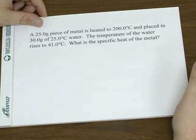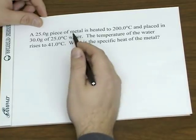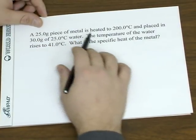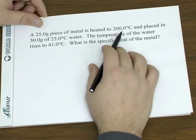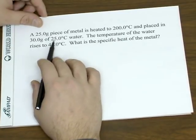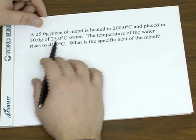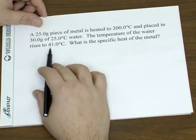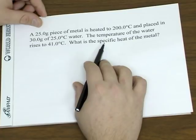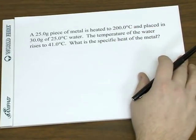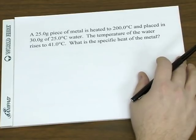Let's look at a typical calorimetry problem. Say you have 25 grams of metal and you heat it to 200 degrees. You place it in 30 grams of 25 degree water. The temperature of the water goes up to 41 degrees. So given this information we should be able to calculate the specific heat of the metal. In fact, this is a pretty common way to calculate the specific heat of a metal.